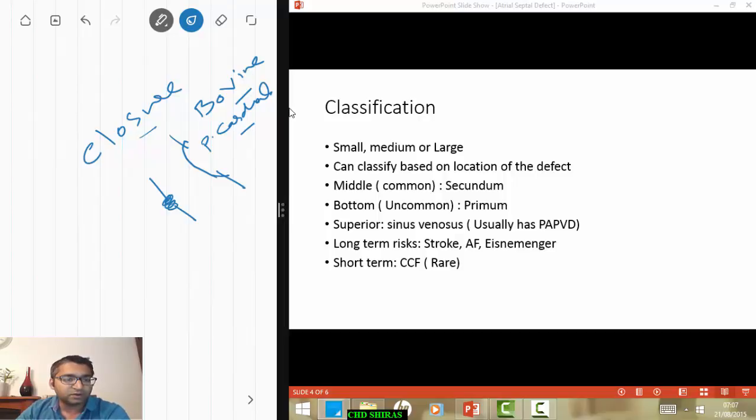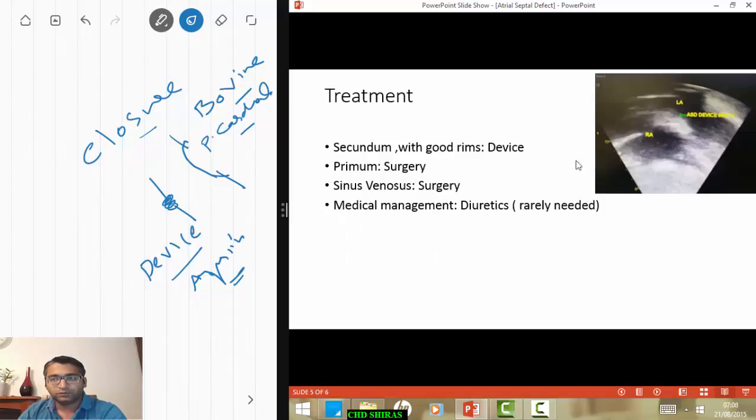If it's a device closure, they'll need to be on aspirin for six weeks or so, and then we can stop the aspirin once the endothelium is formed over the device. If it's a surgical closure, it's just the usual postoperative precautions. You need to do an echocardiogram infrequently after the surgery to make sure there is no pericardial effusion, which occasionally happens. It usually resolves on its own. If it's large, you need drainage.